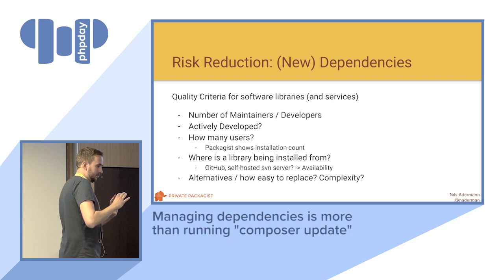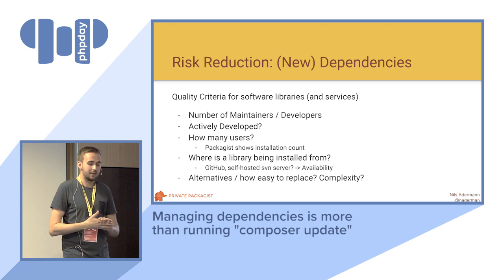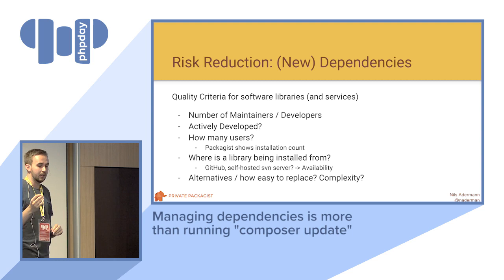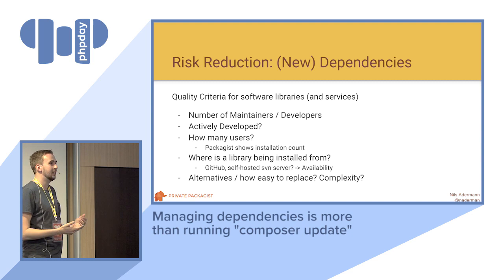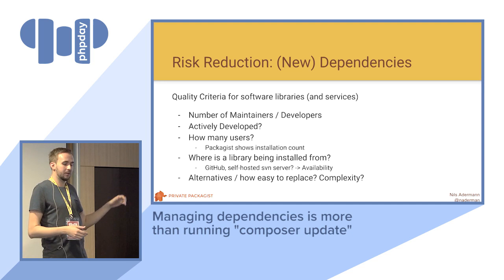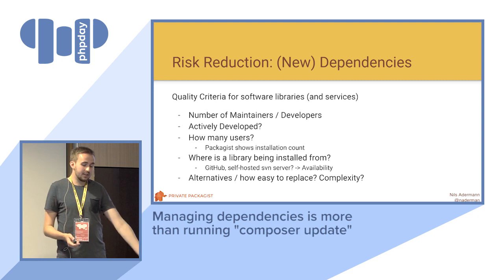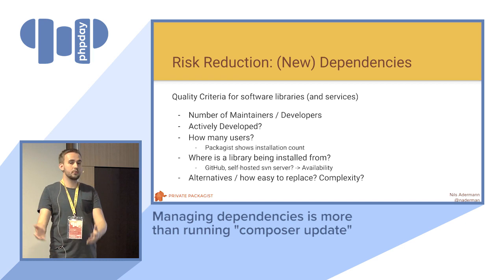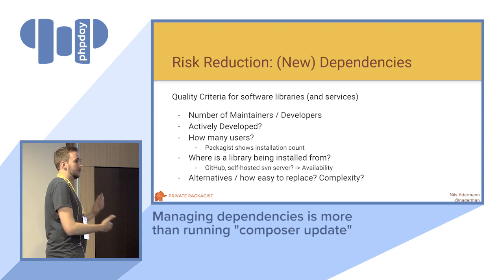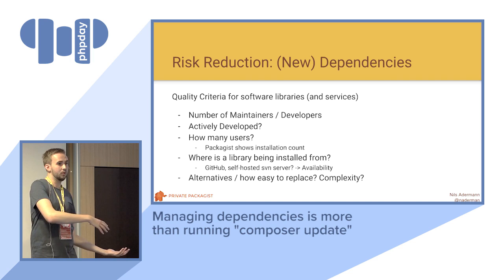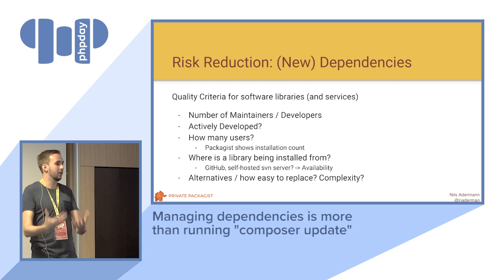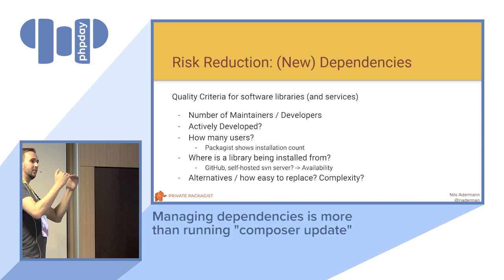The same thing applies for new dependencies. Some criteria I have here for adding a new dependency to your project: looking at the number of maintainers or developers of the library, is it being actively developed, how many users does it have — Packagist helps a bit with the install count, which is not useful as an absolute number to compare libraries, but useful to see whether somebody is using it at all. You can look at where the library is being installed from — am I downloading this off GitHub or some self-hosted SVN somewhere? Do you investigate alternatives? How easy would it be to replace if it wasn't maintained anymore? How big is the complexity of the system if I would have to step in and fix something? Who of you actually goes through this thought process when you add a new dependency?